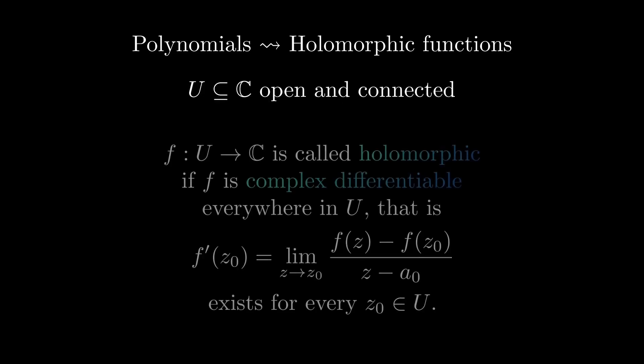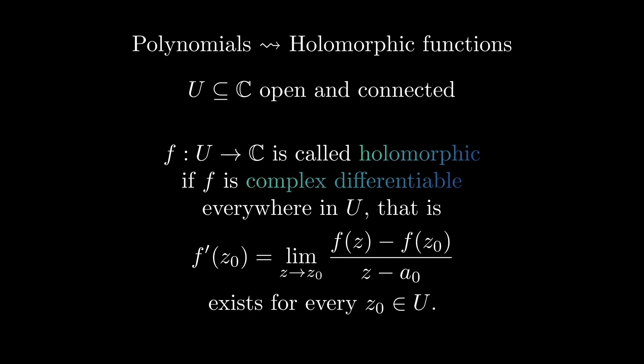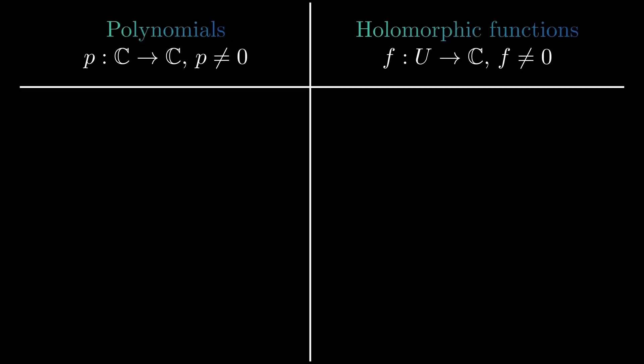Many properties of polynomials can be generalized to holomorphic functions. Consider an open and connected subset of the complex numbers. A function on that set is called holomorphic if it is everywhere complex-differentiable. This condition is a lot stronger than that of real differentiability, so let's look at which properties of polynomials we can generalize to holomorphic functions.